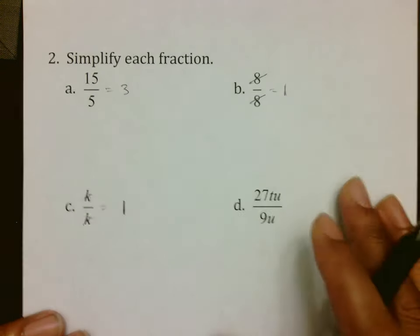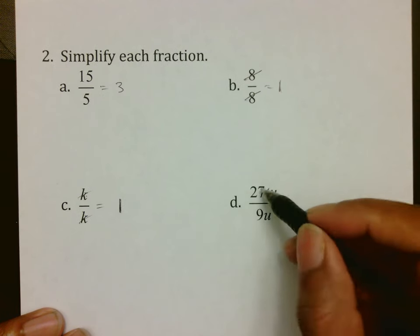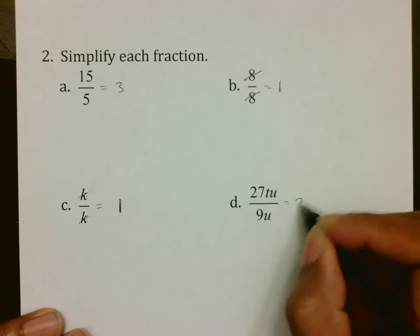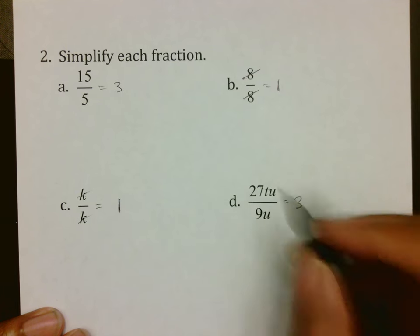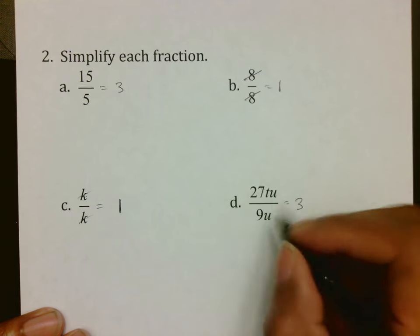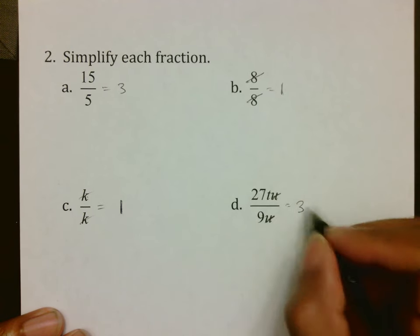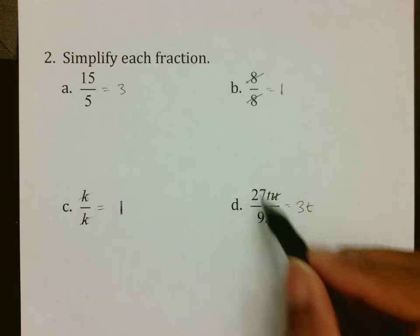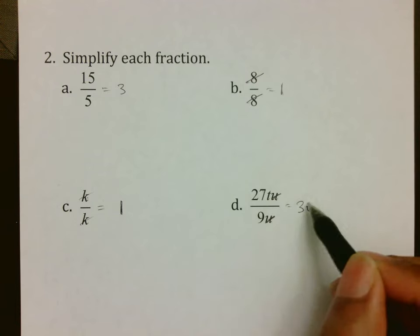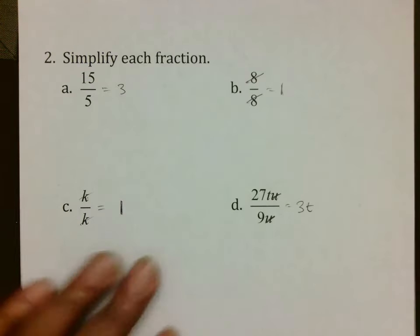Putting that together with what's going on over here, we have numbers and variables. First thing you want to do is look at the variables. 27 over 9 is 3. But if you're looking at your variables, notice that there is a u on top and a u on the bottom, which means that both of these things go away, and the only thing I have left is a t up top. 27 divided by 9 is 3, and there is also a t up top, so that's 3t.